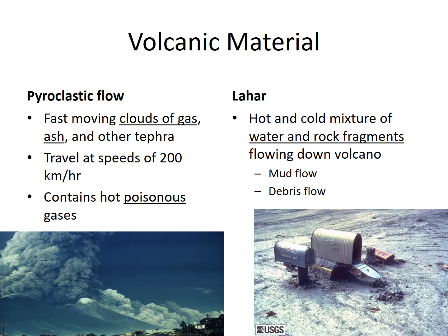We also have what's called pyroclastic flow — these are fast-moving clouds of gas, ash, and other tephra. They travel at speeds of 200 kilometers per hour and can contain hot, poisonous gases. Back around 2010, an Icelandic volcano exploded and the pyroclastic flow traveled over most of Europe, causing lots of delays in air travel and shipping. Then we have lahar, which is a hot and cold mixture of water and rock fragments that flows down the volcano — mud flow, debris flow, and similar material. This image shows mailboxes covered by lahar.